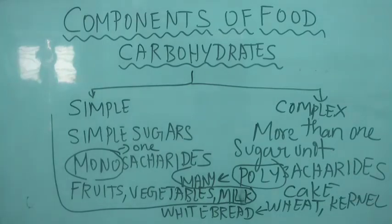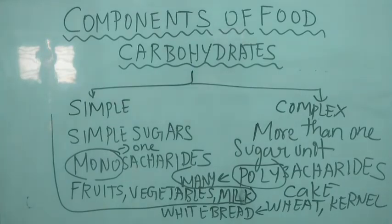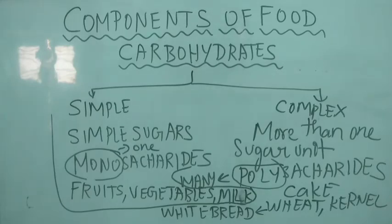Simple carbohydrates mostly provide sweetness and increase the glucose level in the blood, and they are very easy to digest. Complex carbohydrates do not produce as much glucose or increase sweetness in the blood, and they are very difficult to digest. This raises the question: why is complex carbohydrate difficult to digest?